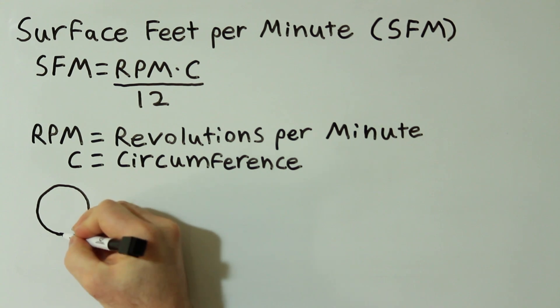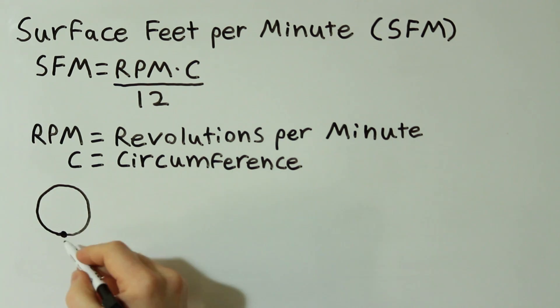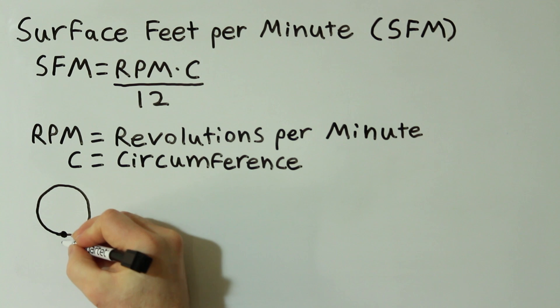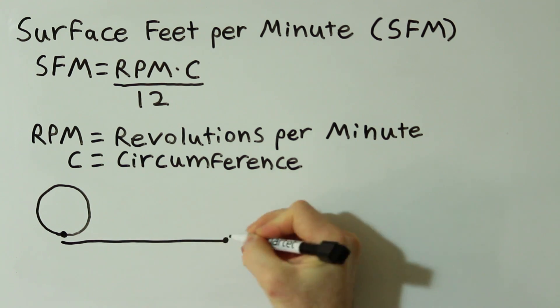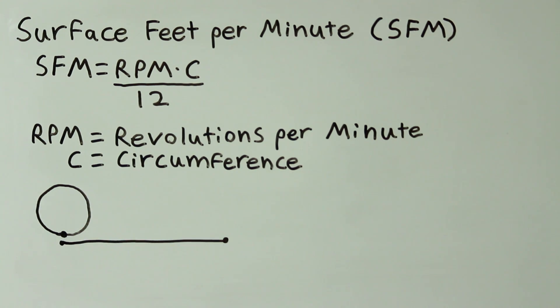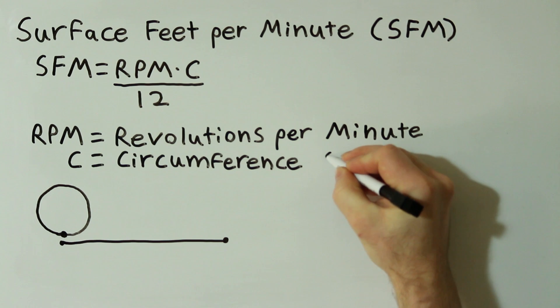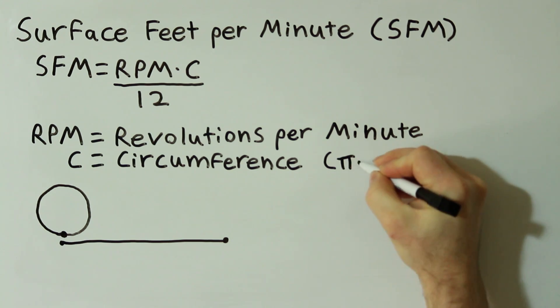Circumference is the distance around the outside of a circle and would be the distance the circle would travel on a flat surface in one revolution. The formula for circumference is pi times diameter.